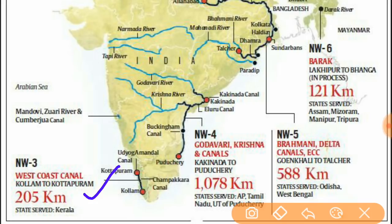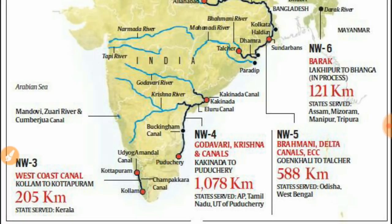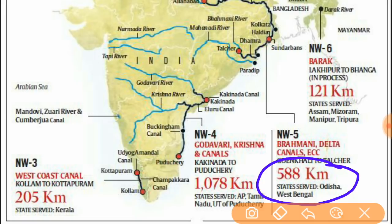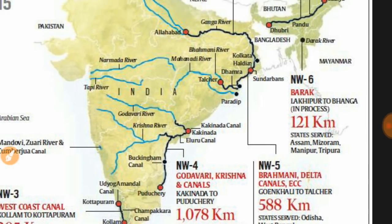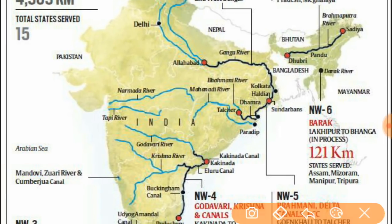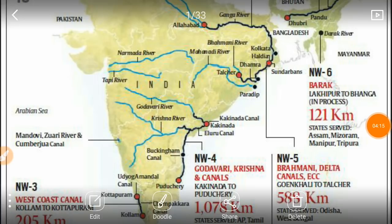National Waterway 4 is a combination of the Godavari, Krishna, and canals from Kakinada port to Puducherry — it is an inland waterway, not on the Bay of Bengal — connecting Andhra Pradesh, Tamil Nadu, and Puducherry. National Waterway 5 is the Brahmani Delta Canal from Talcher to Dhamra — 588 kilometers — in Odisha and West Bengal. The proposed National Waterway 6 is on the Barak River from Lakhipur to Bhanga, stretching through Assam, Mizoram, Manipur, and Tripura.